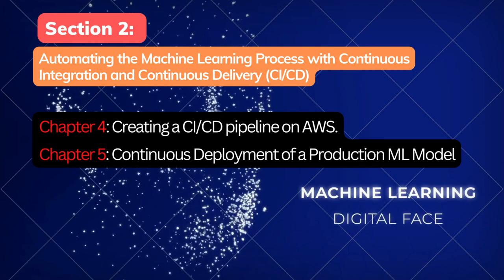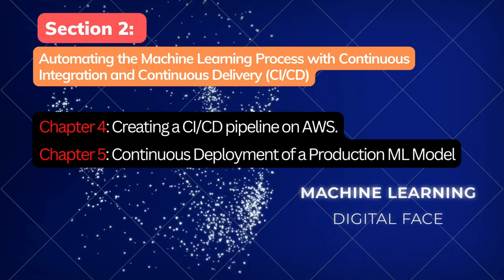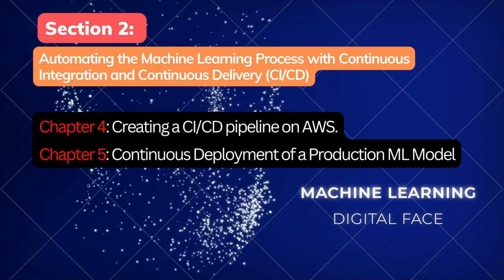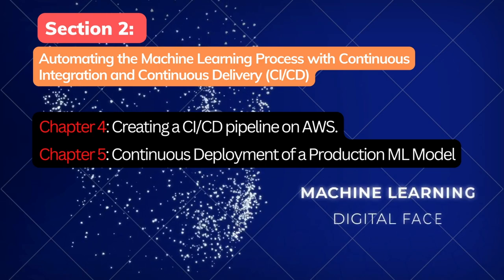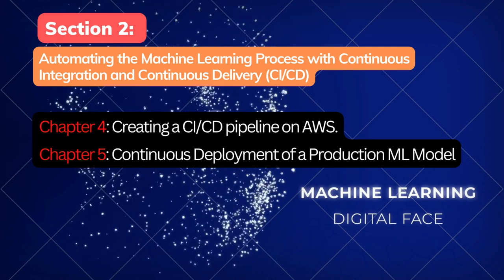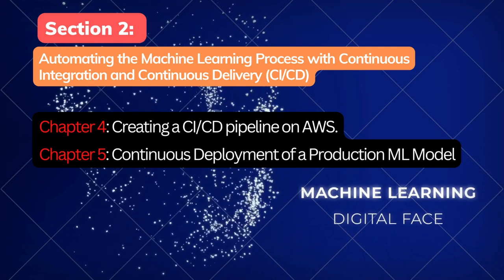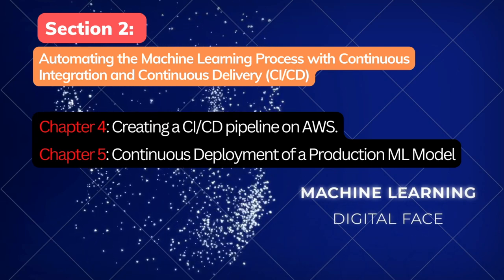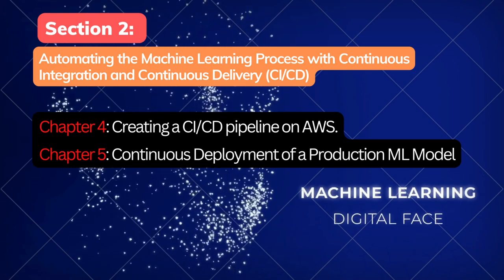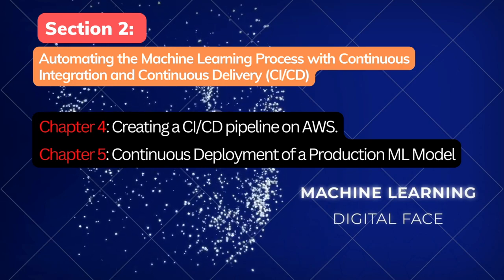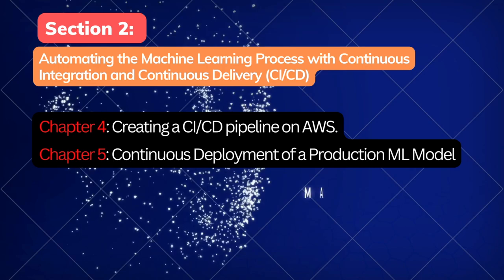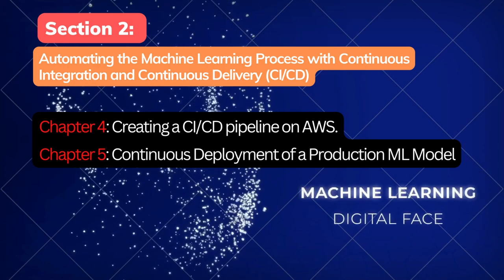Chapter 4 introduces the DevOps culture and highlights how the DevOps process can evolve into an MLOps process. Chapter 5, Continuous Deployment of a Production ML Model, introduces the typical tasks performed by an ML practitioner within the context of a deployed CI/CD pipeline and DevOps culture. It walks you through creating the model assets which trigger the pipeline execution and shows you how to manage and monitor progress.